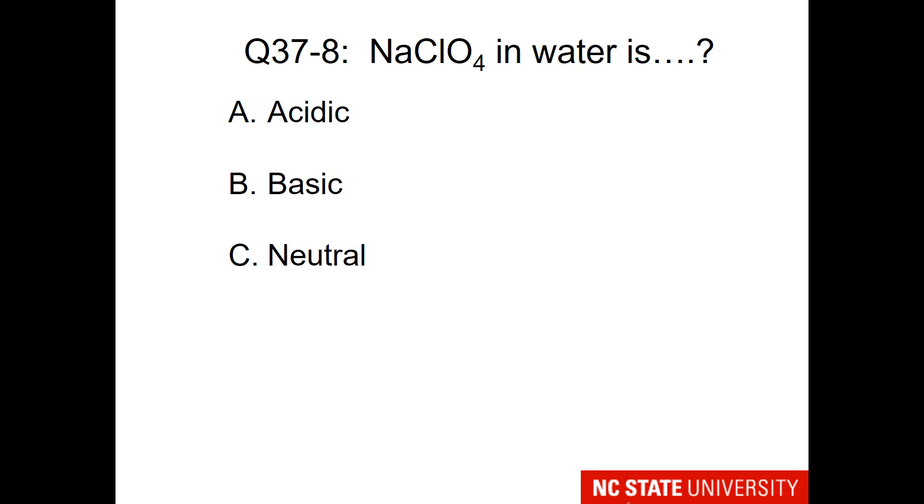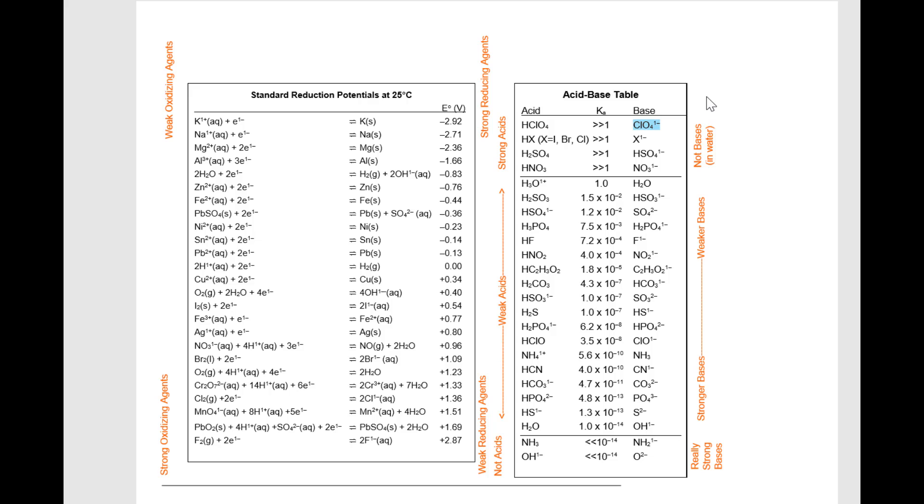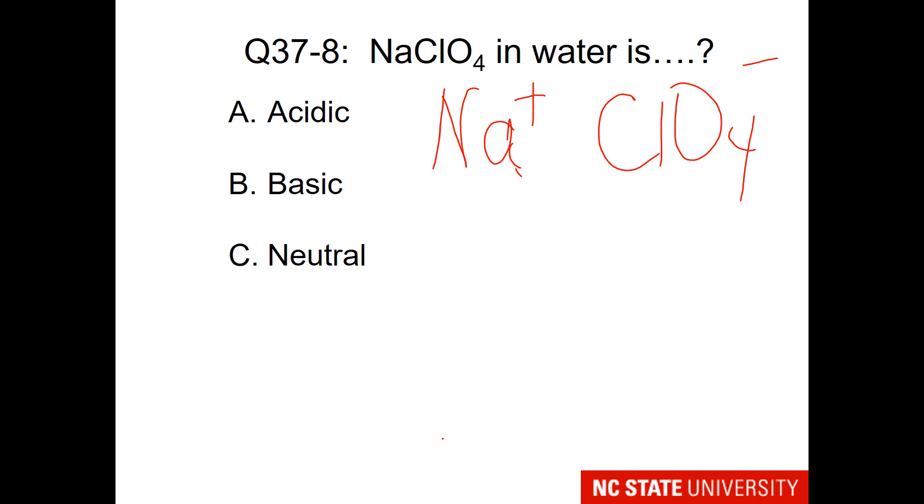Here is another example. Sodium perchlorate. In solution, this breaks up into sodium ion, which is not on the acid base table, and the perchlorate ion, which is. But let's look at where it is on the acid base table. We can see that the perchlorate ion is the conjugate base of a very strong acid. It is in the region of bases very unlikely to grab a proton. Please choose a letter.